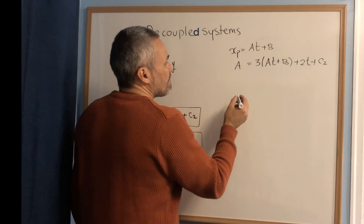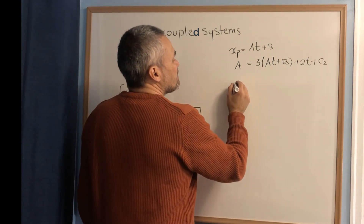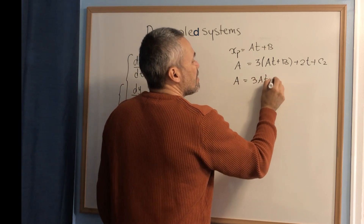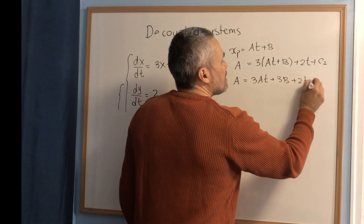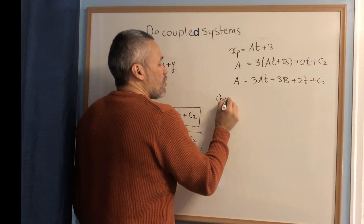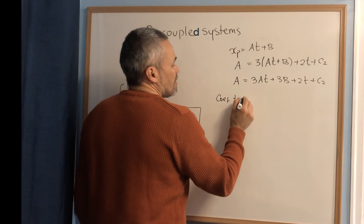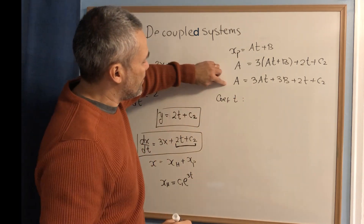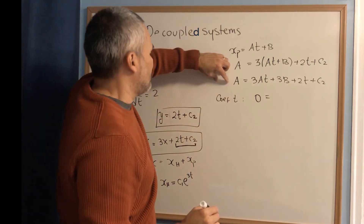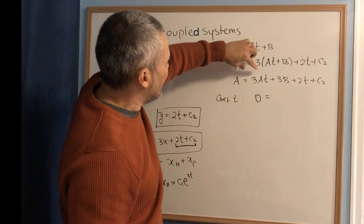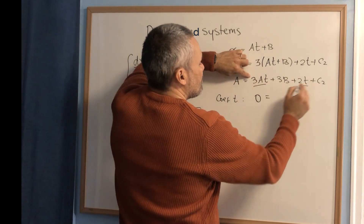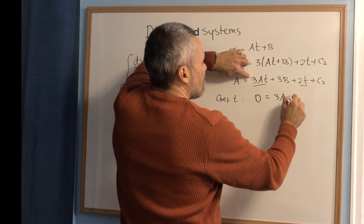Expanding the right side: a equals 3at plus 3b plus 2t plus c2. We compare coefficients. The coefficient of t on the left is 0 (there is no t on the left). The coefficient of t on the right is 3a plus 2.